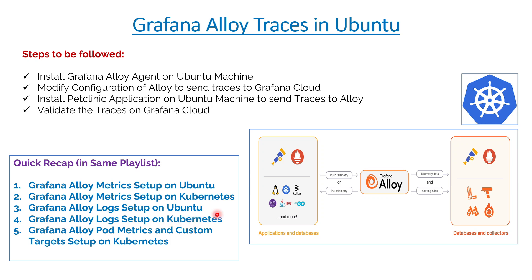That fourth session covered re-labeling and adding static labels. The last session was about getting Grafana Alloy pod-level metrics of any namespace as well as custom targets. A custom target could be a Node Exporter, Windows Exporter, or Process Exporter running on a Kubernetes cluster — how to ship those metrics from the cluster to Grafana Cloud using Grafana Alloy, not using Grafana Agent or something else. That session was requested by multiple users.